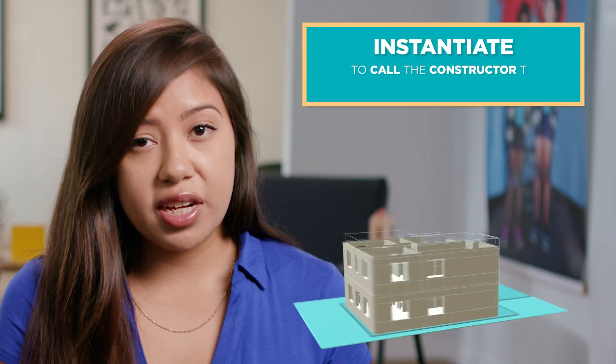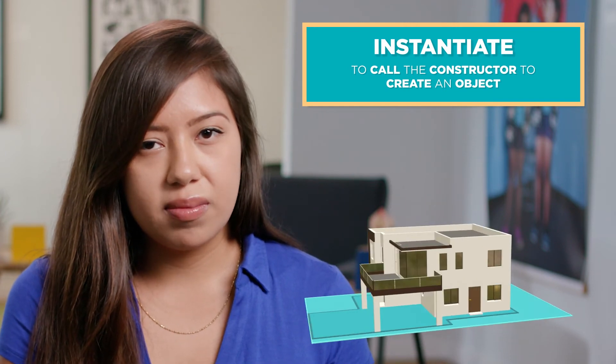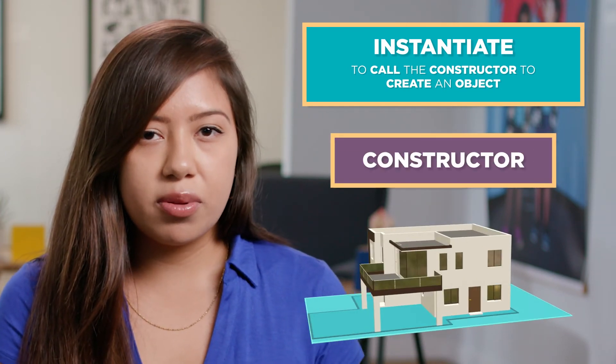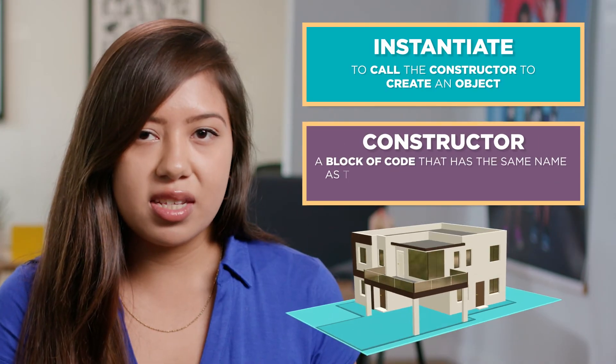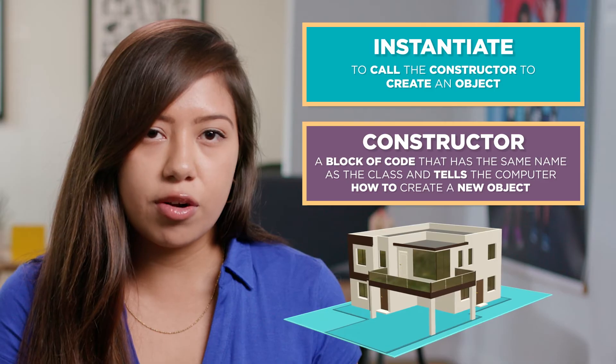To instantiate is to call the constructor to create an object. The constructor is a block of code that has the same name as the class and tells the computer how to create a new object.